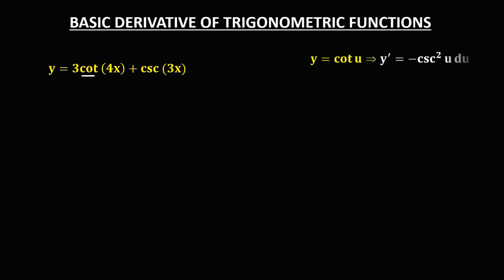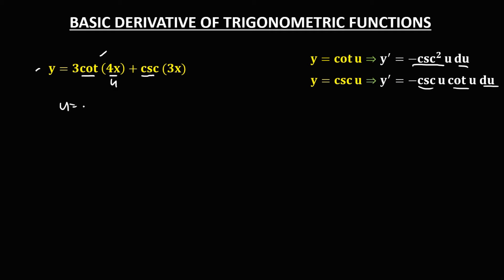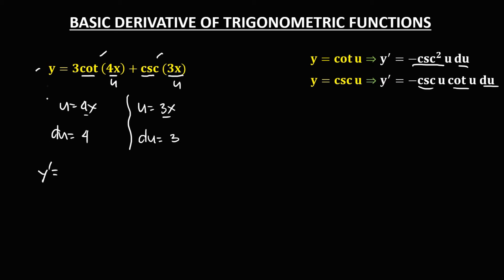For the next given, the derivative of cotangent is negative csc(u)·cot(u) times the derivative of u. We need to find the derivative for every term. For the first term, u = 4x and the derivative of u is 4. For the second term, u = 3x and the derivative of u is 3.